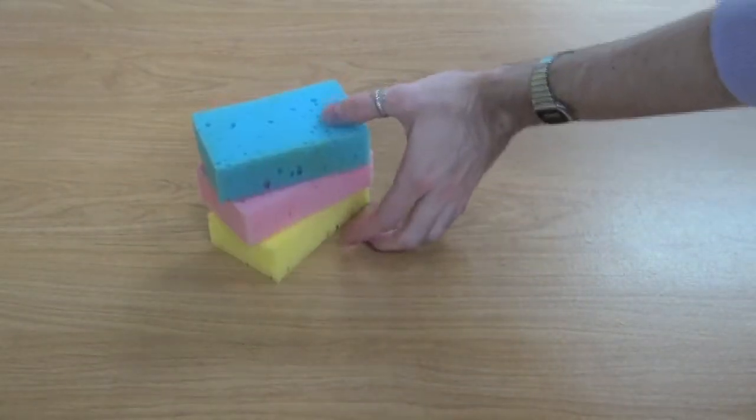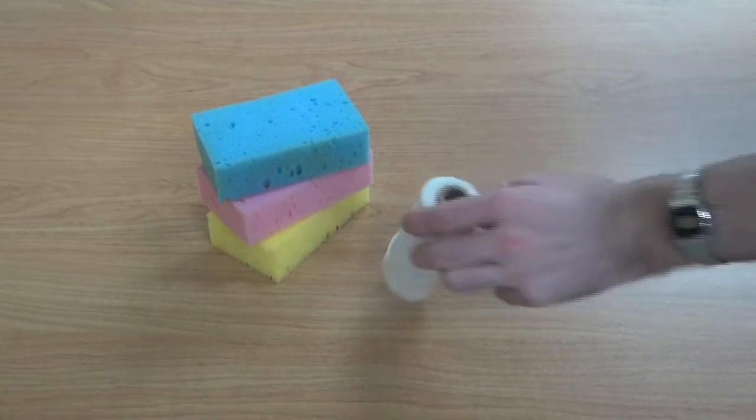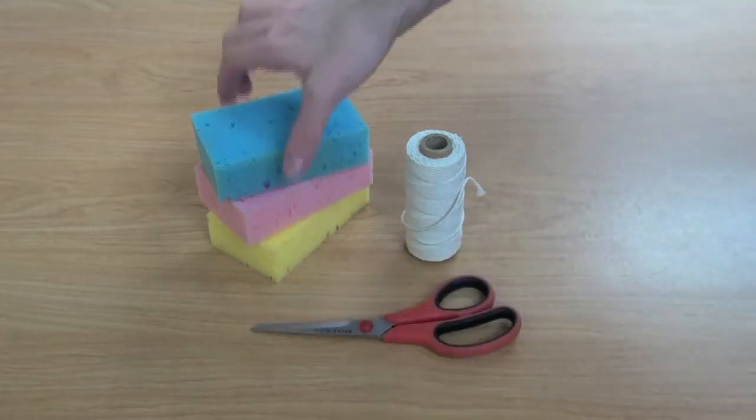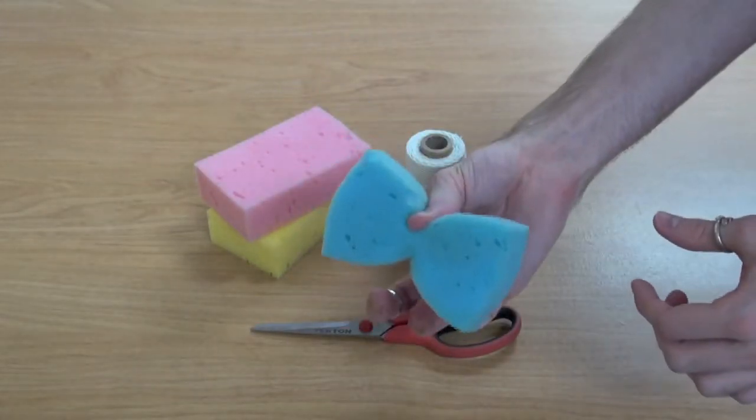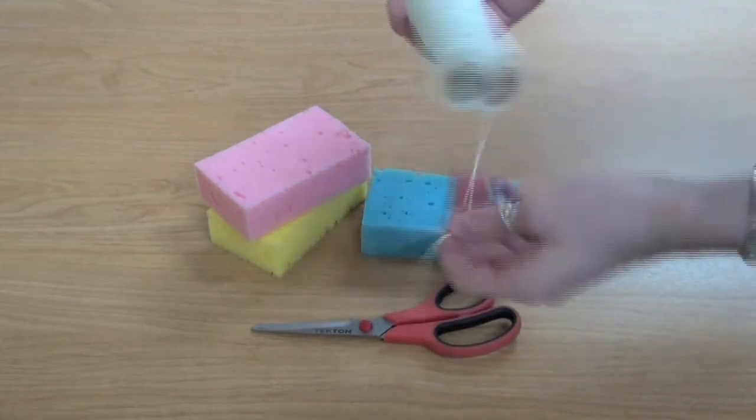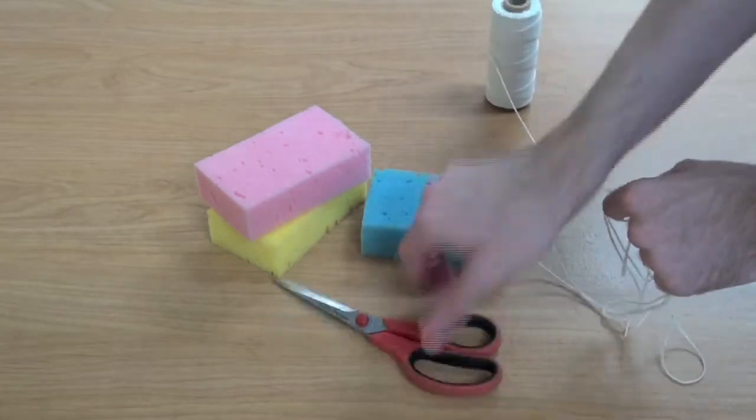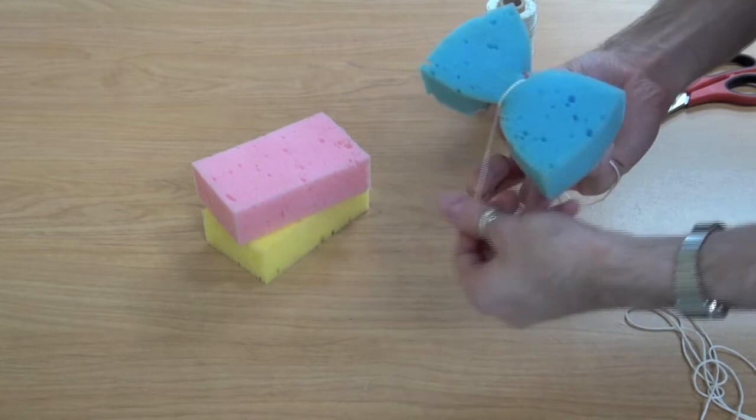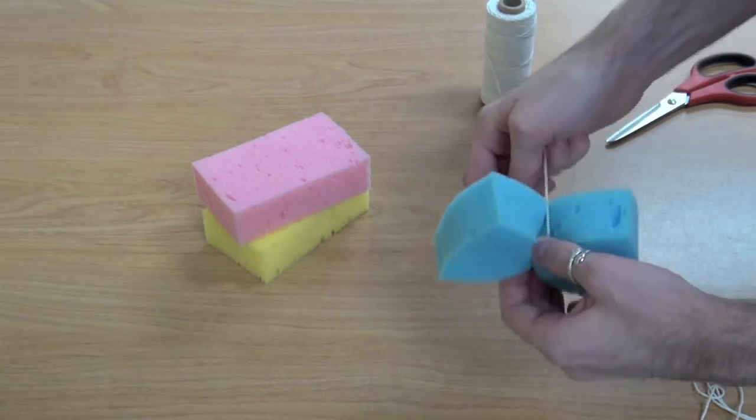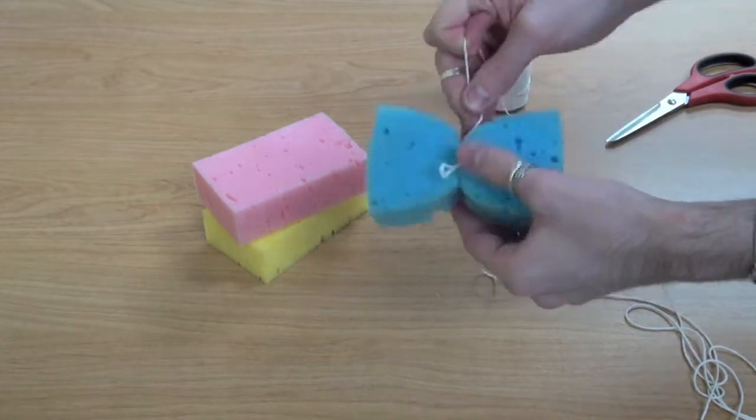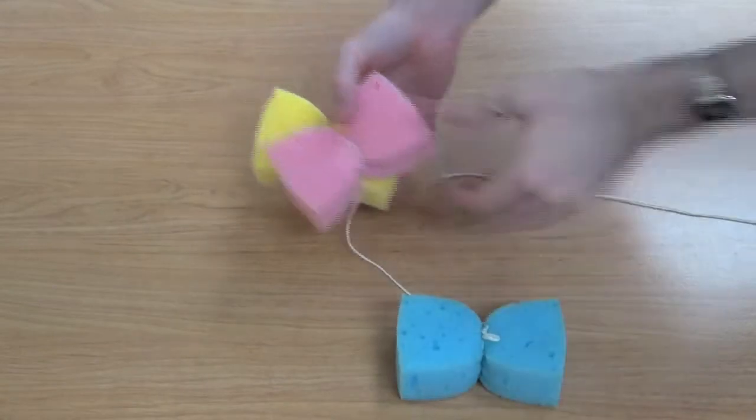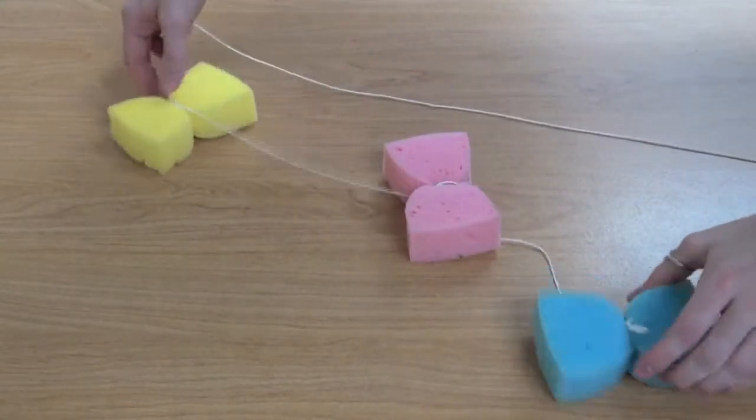While you let your nectar cool, we can start making the feeder using our sponge and twine. We're also going to use scissors. Take your sponge and pinch it at the end so it resembles a butterfly. Next, take about two feet of string, cut it, and pinch the edge and wrap it together. Here I've tied all three of my sponges to one piece of string. This is going to help us hang it in the tree.